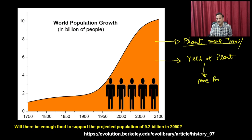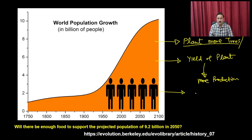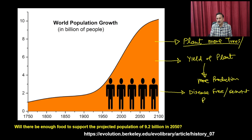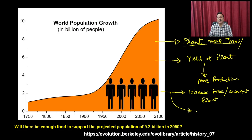Increasing yield gives more production and compensates for the increased number of people. Not only that, you can also reduce losses by developing disease-resistant crops or crops that survive harsh conditions — disease-resistant plants or stress-bearing plants that can survive whether there is flooding or less water.